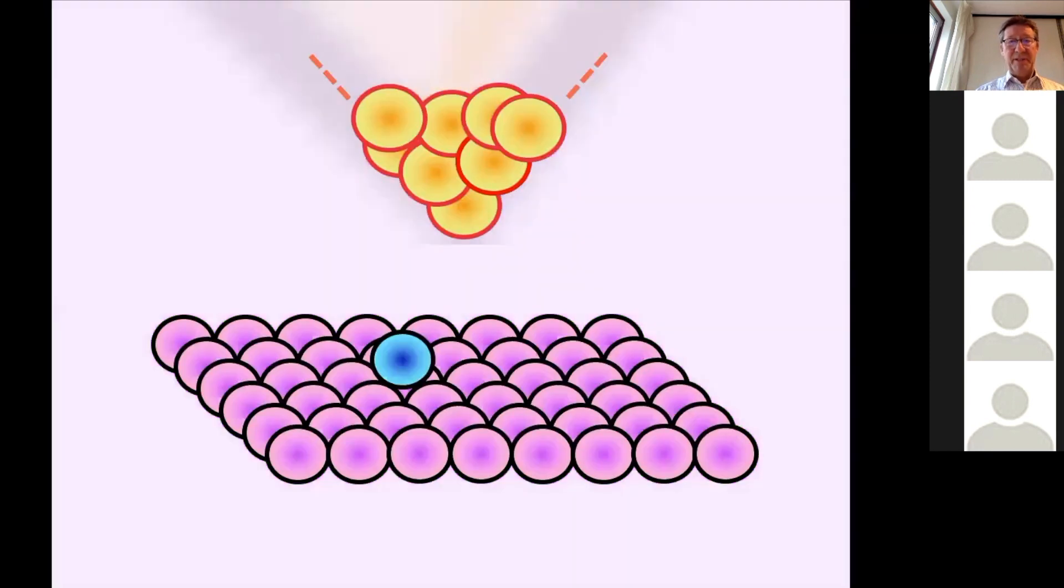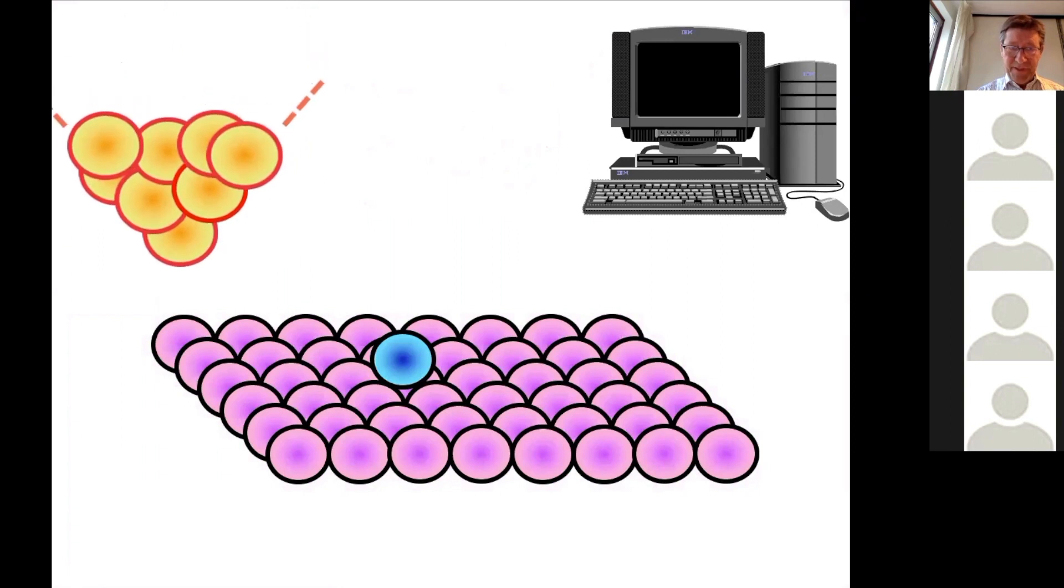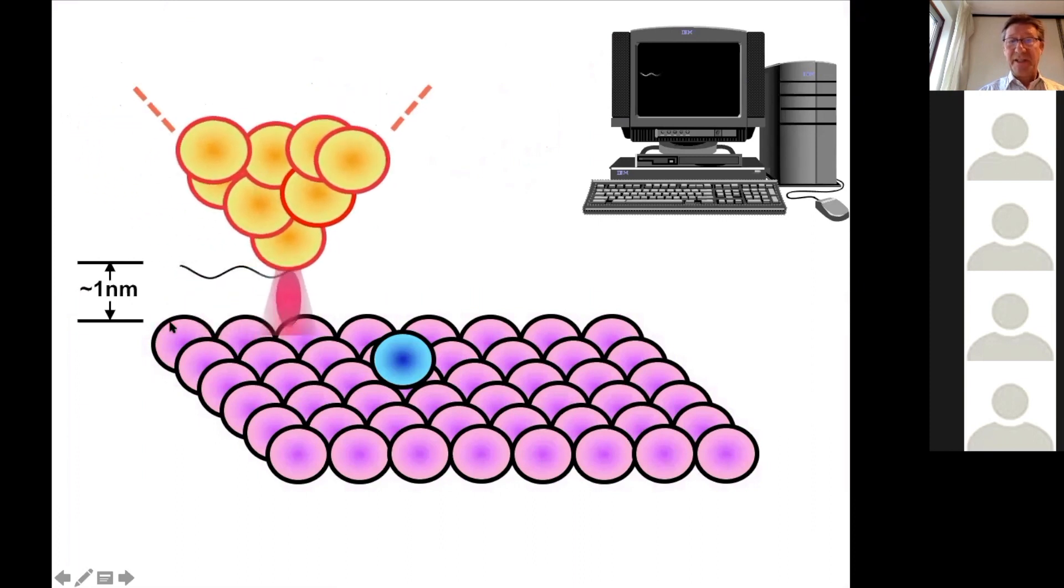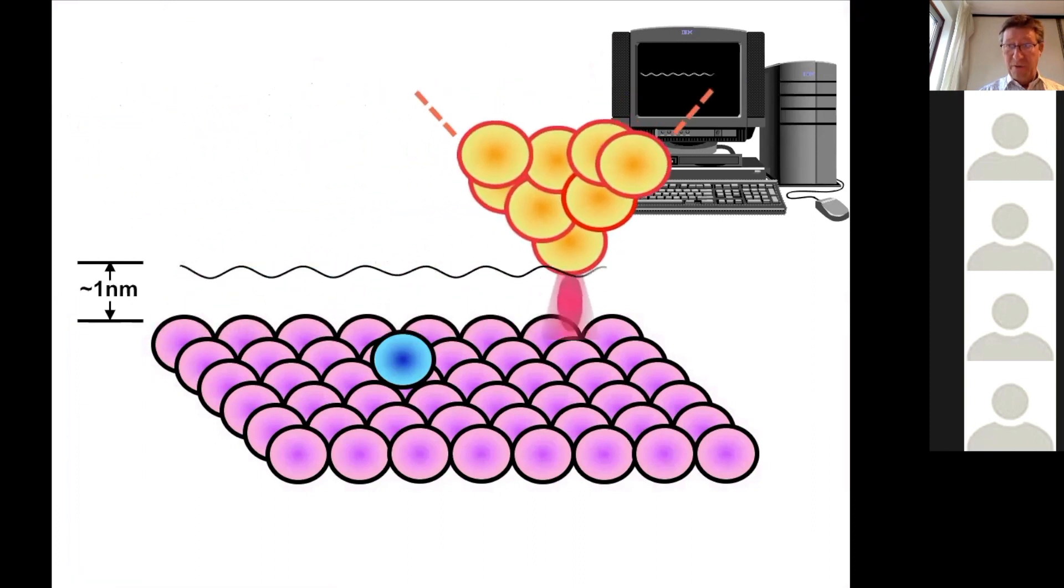Here we see the tip, the tip is atomically sharp. And here we see a surface with what we call an ad atom. So there's one atom lying on an atomically flat surface. If you put the needle close to the surface, there can be a current between the tip and the surface.